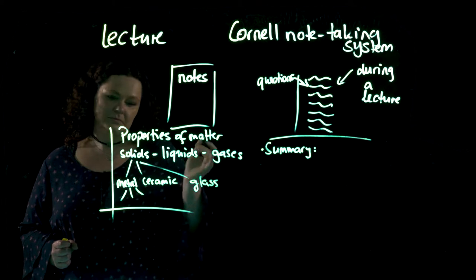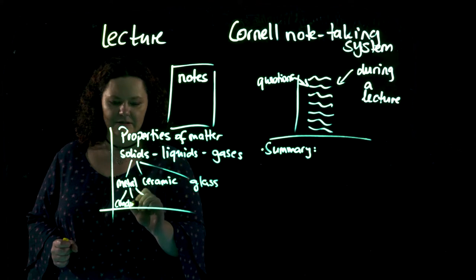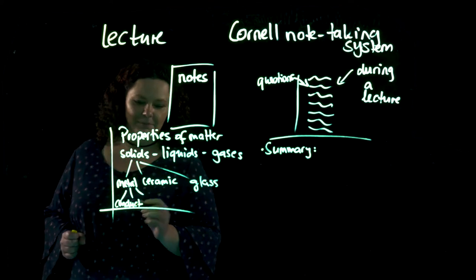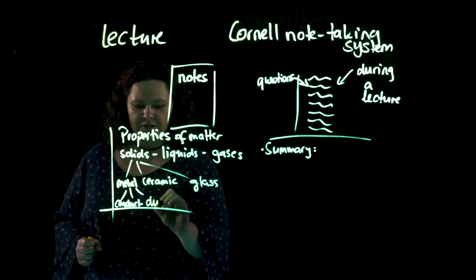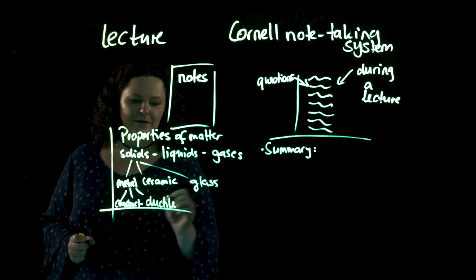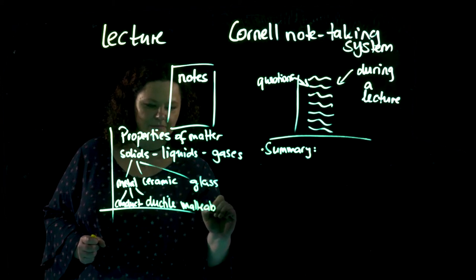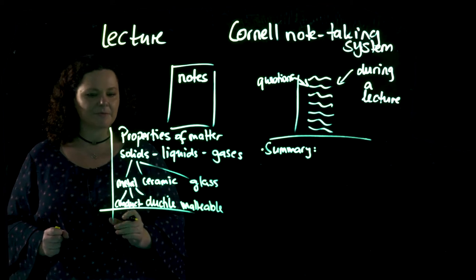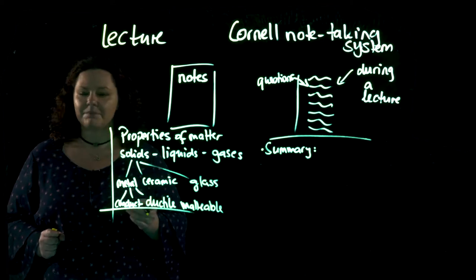Metals have some good properties for us. For example, metals conduct electricity in most cases. They do that quite well. For example, copper. Metals also are ductile. Ductile means they can be drawn into shape. That's why we can use them for wires. And they are also malleable. Malleable means we can beat them into shape. Metals have some quite good properties. That's why we use them for our purposes in mechanical engineering.